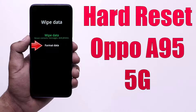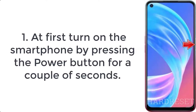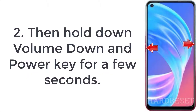How to hard reset Oppo A95 5G. Step 1: Turn on the smartphone by pressing the power button for a couple of seconds. Step 2: Then hold down the volume down and power key for a few seconds.